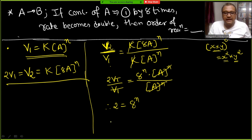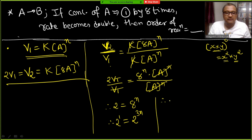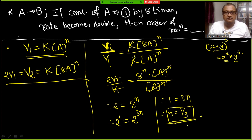2 = 8^N means 2¹ = (2³)^N = 2^(3N). Therefore 1 = 3N, so N = 1/3. The order of reaction is 1/3.